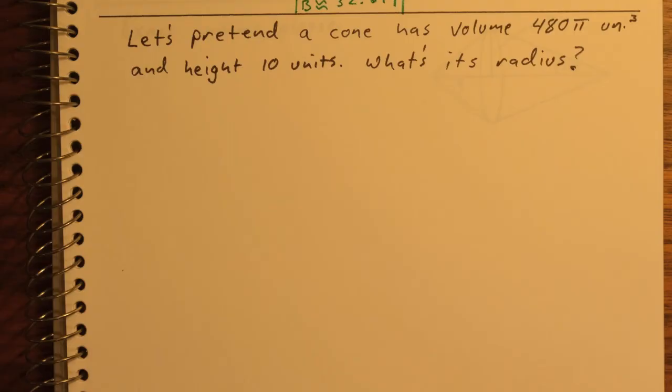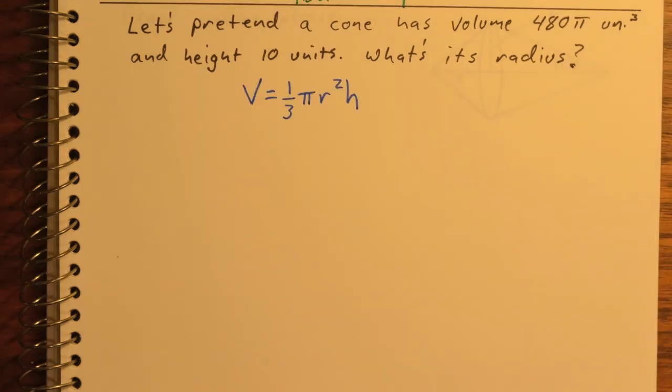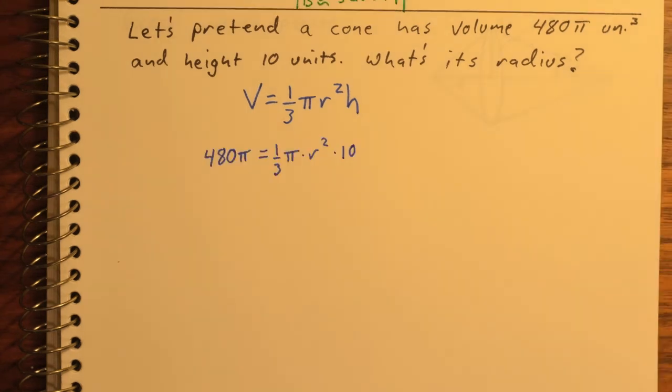Next, let's pretend a cone has a volume of 480 pi cubic units. Its height is 10. How big is its radius? Well, we know we're dealing with this formula because we've got a cone. Then we know the volume and we know the height. We need to solve for radius.